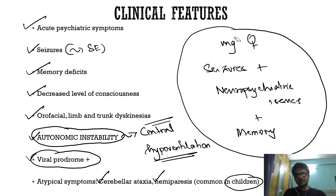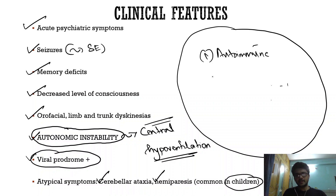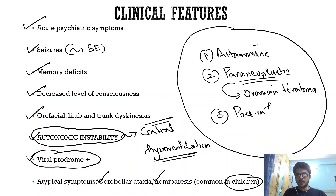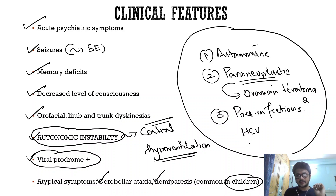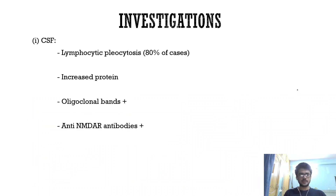There are three settings in which anti-NMDA receptor encephalitis can occur: number one is autoimmune, number two is paraneoplastic — the associated cancer is ovarian teratoma — and number three is post-infectious. The CNS infection associated with NMDA receptor antibodies is HSV encephalitis; in 20% of HSV encephalitis cases, patients develop anti-NMDA receptor antibodies with an autoimmune encephalitis.